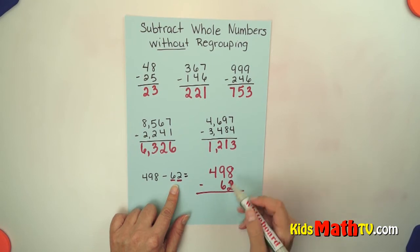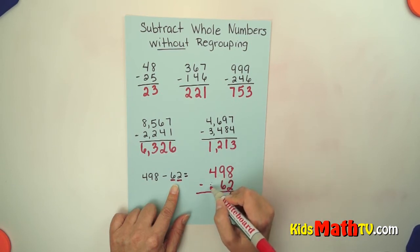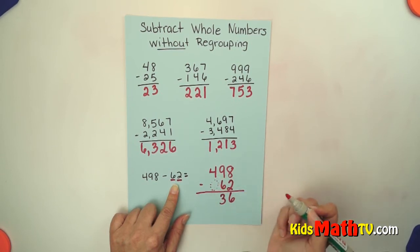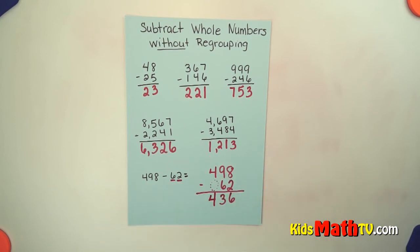So 8 minus 2 is 6. 9 minus 6 is 3. And 4 minus nothing, or this is like a zero there. 4 minus nothing is 4. And our answer is 436.